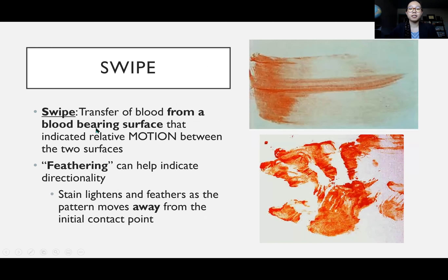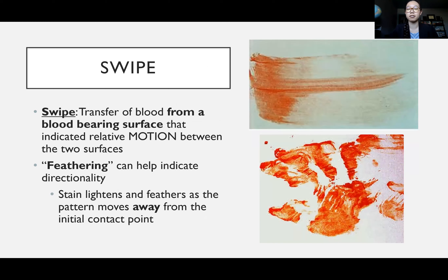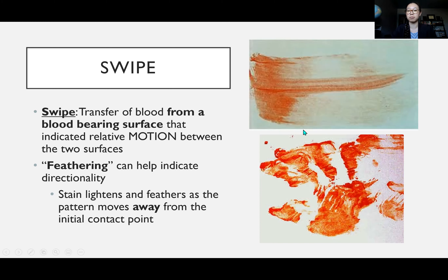Next, we have a swipe — the transfer of blood from a blood-bearing surface to a non-blood-bearing surface, indicating relative motion between the two surfaces. So if I had blood on my hand and wiped it on my phone which doesn't have blood on it, that's a swipe — kind of the opposite of a wipe. This is indicated by feathering, which can help determine directionality. Feathering is when the stain gets lighter as the pattern moves away from the initial contact point, because the blood is lost as it's wiped across.